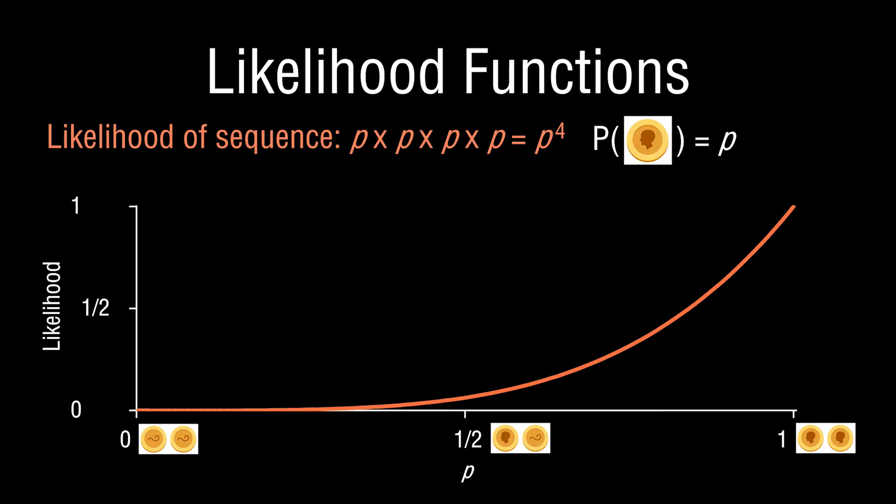Hopefully the idea of a likelihood function makes sense. We have a model whose parameters are unknown, but we have the set of observations, and we're trying to map out how likely the observations would have occurred as a function of the model parameters. It's a challenging concept at first, but the key insight is: the outcomes and observations are fixed and known, while the underlying model is what we're trying to figure out.